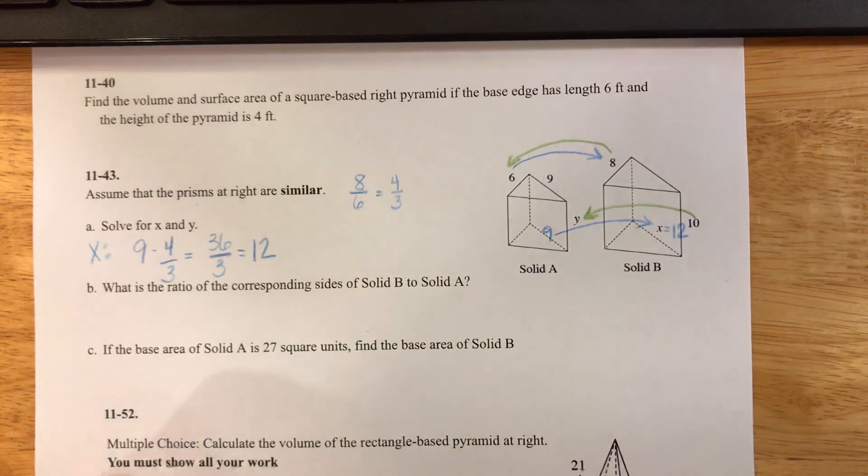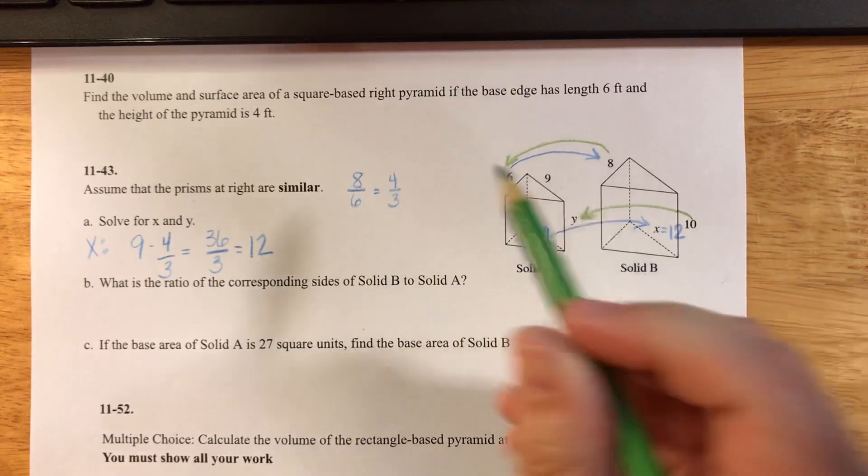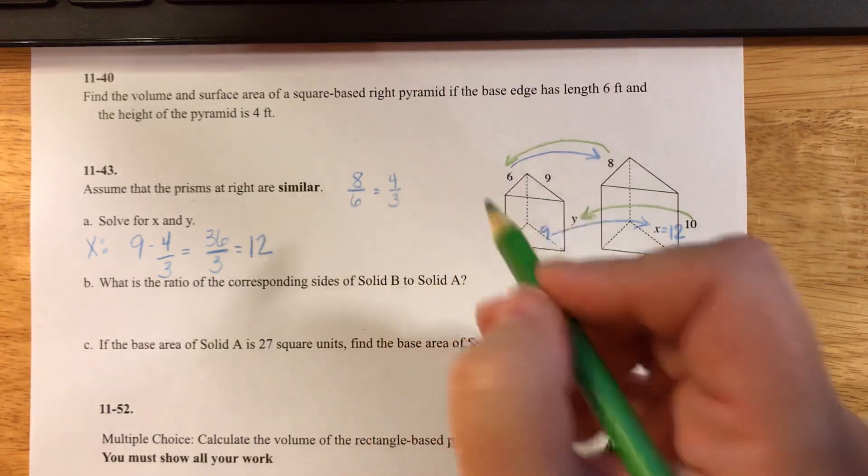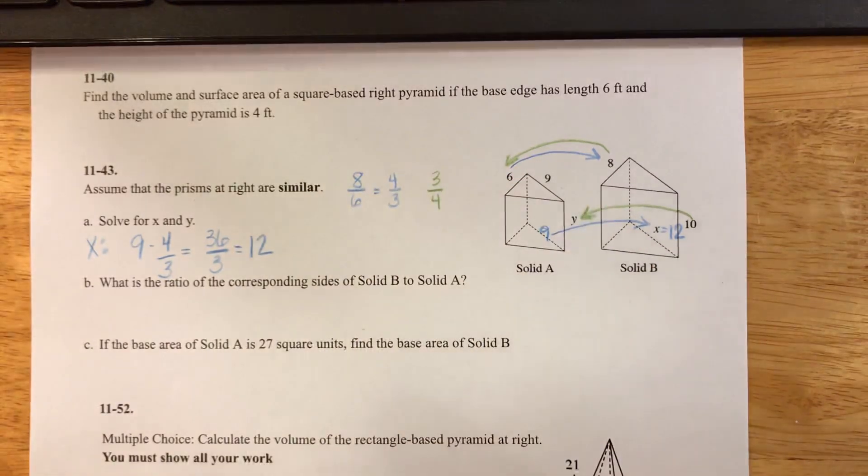Now I want to figure out what y is. I'm going from the bigger to the smaller, so instead of multiplying it by 4 over 3, I'm going to multiply it by the reciprocal, 3 over 4.